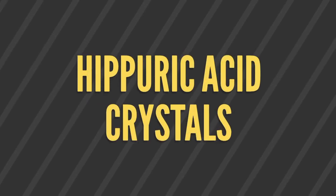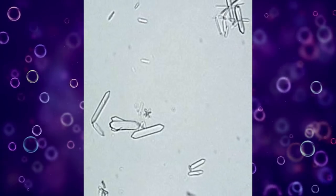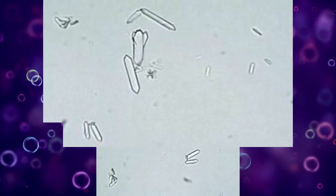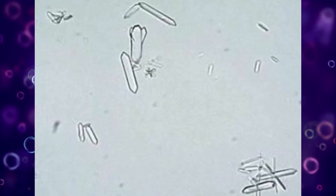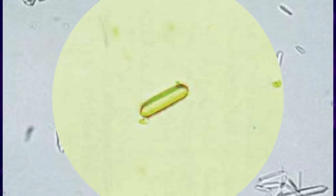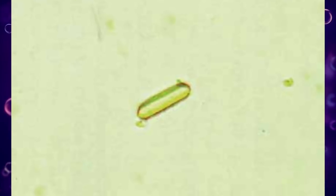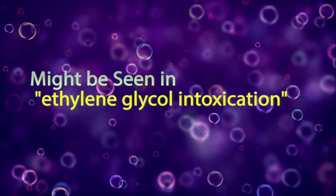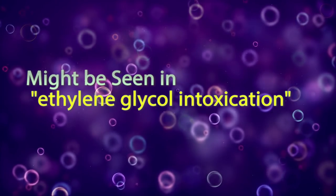Hippuric acid crystals are found in acid, neutral, or slightly alkaline urine. These colorless crystals are prisms, plates, or needle-like in shape and often cluster together, conglomerating into masses. They have little to no clinical significance but might be seen in ethylene glycol intoxication.